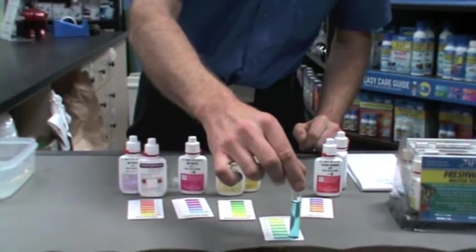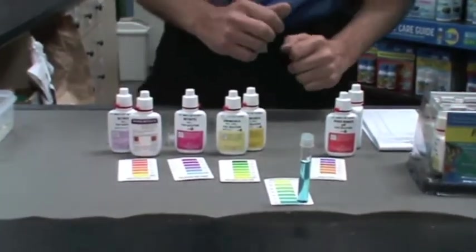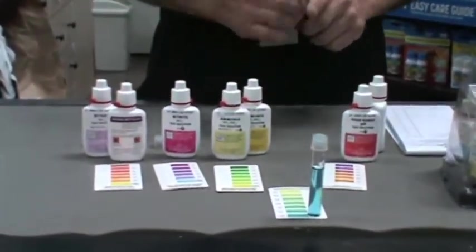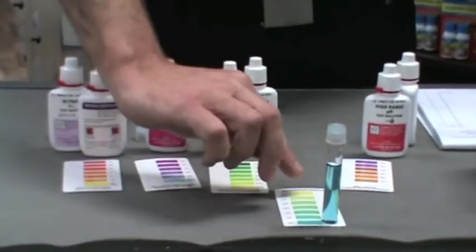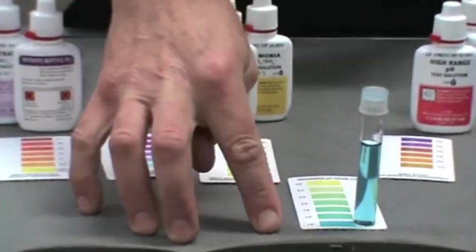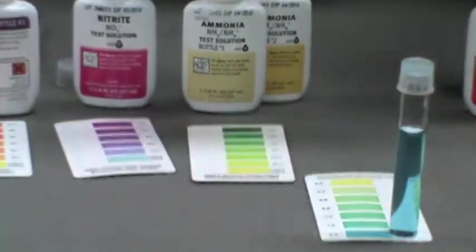That's showing right at the top of the test scale. We're going to do another test to determine whether this has passed the top of the scale by using the high range pH test kit.